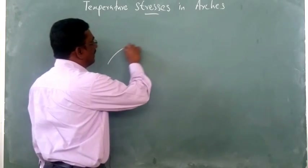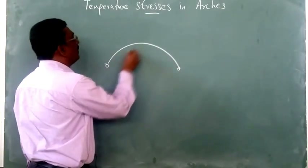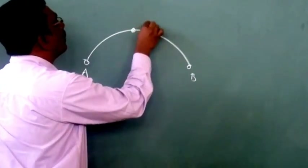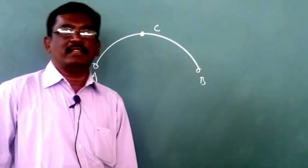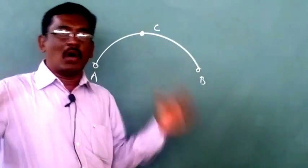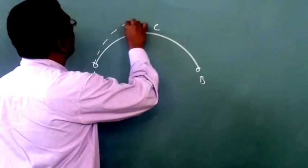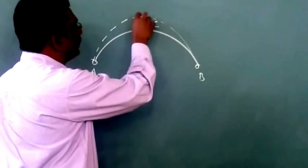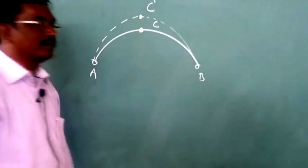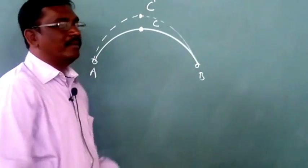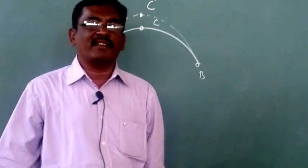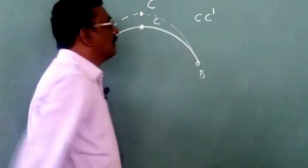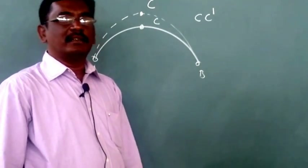For instance, let us take a three-hinged arch. The three-hinged arch has support A and support B, and a crown C at the top. If there is any change in temperature, the arch axis will elongate. As a result, the arch will deform — the crown will be shifted upward to a new point. So the temperature change will result in an increase in length of the arch, and consequently the crown will go up.